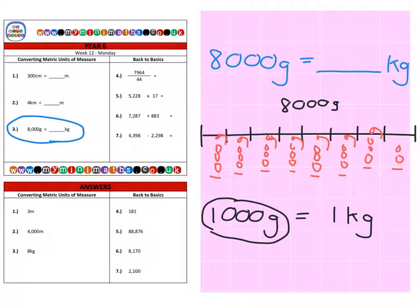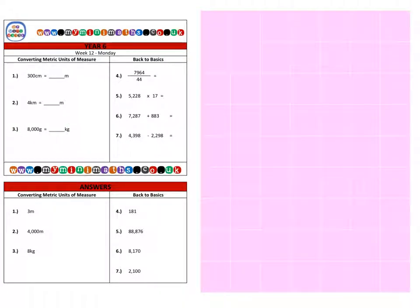We can clearly see we've got eight lots of 1,000 grams, and each of these thousand grams is equal to one kilogram, so altogether we have 8 kilograms. Before I finish today, it's really important to note the importance of learning the basic conversions between the different metric units of measurement.